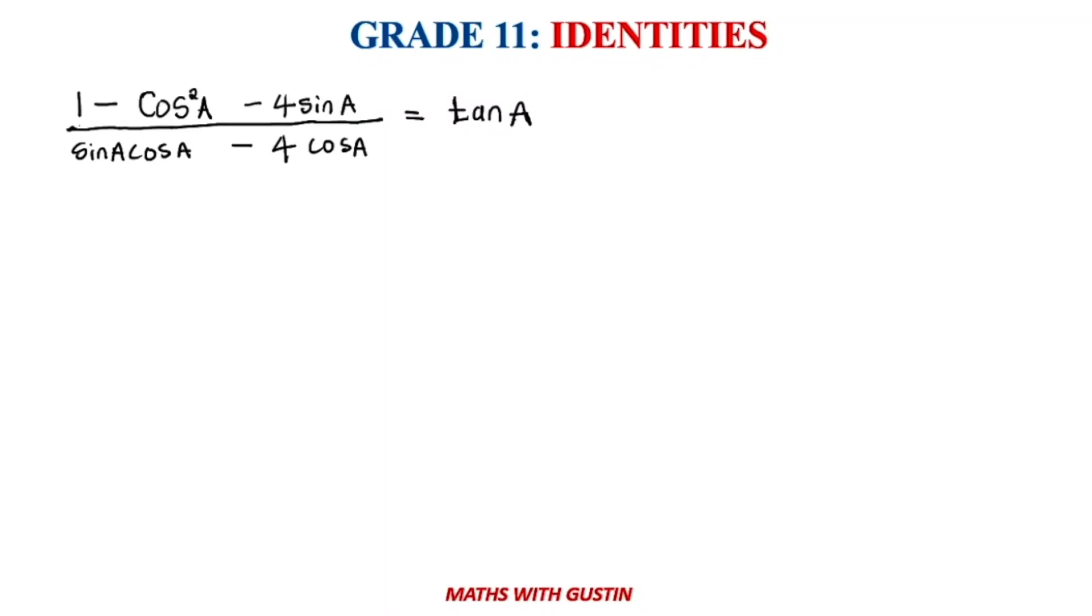Let's have a look at another example right here of grade 11 identities. So what we have here, we have got (1 - cos²A - 4sinA) / (sinAcosA - 4cosA).